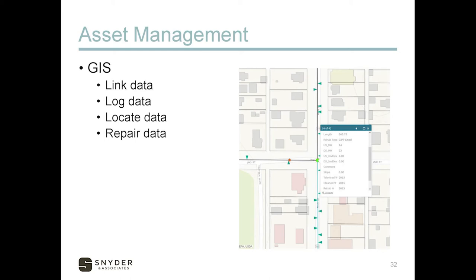For those unfamiliar with GIS — a quick overview. It's a database combined with spatial location data. As you can see in the visual, it's a sewer line. You can click on any of the data points to see what it is — a manhole with different data fields and elevations. The customization of those data fields is infinite. Put whatever information you want in there. It's very useful to manage all the data you collect on your system and have it easily accessible.